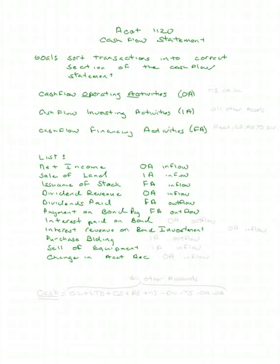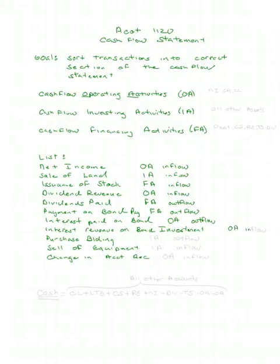How about the interest you paid on the bond? The payment on the bond itself is principal, but what about interest? Interest is part of net income — interest expense — so it's an operating activity and it's an outflow. Students often have trouble deciphering between principal payments and interest payments. How about interest revenue you received on a bond investment? Hopefully you'll say operating activities, an inflow, because that's part of your net income.